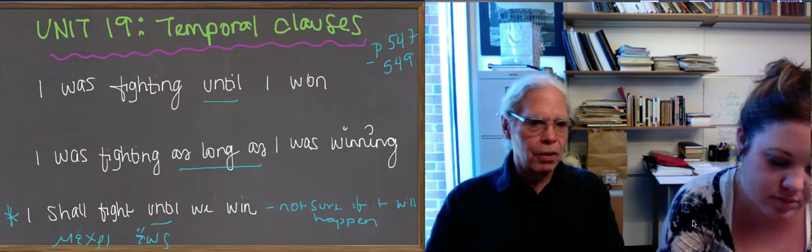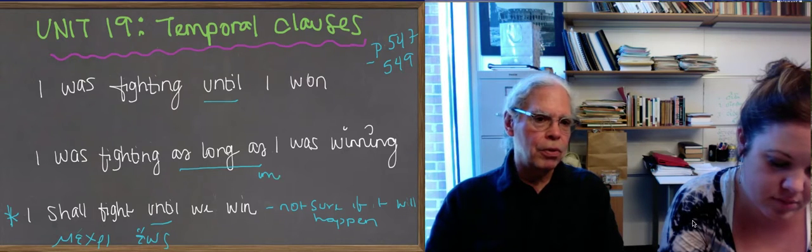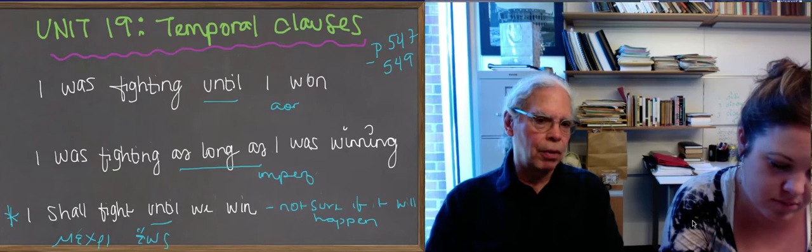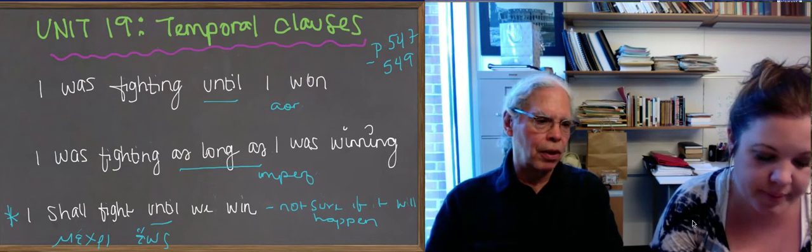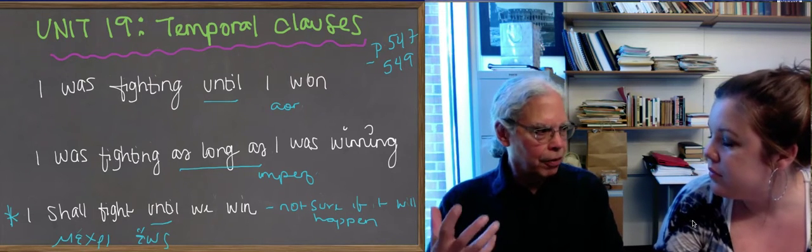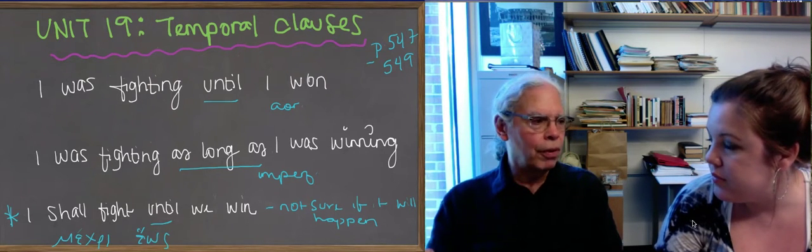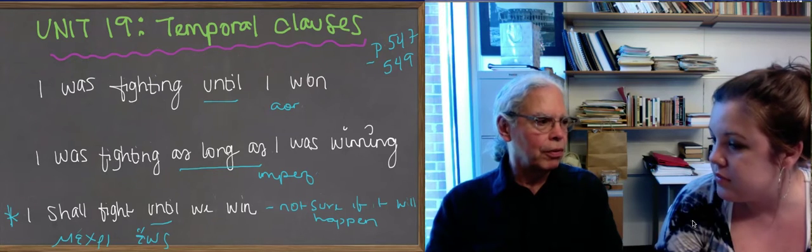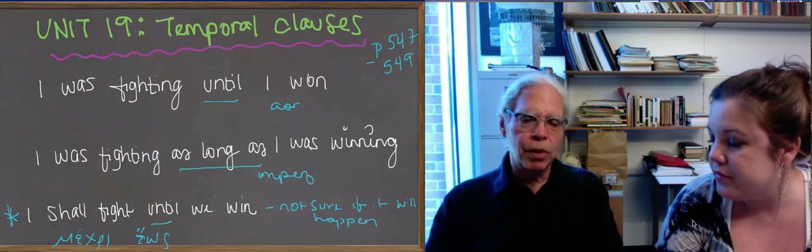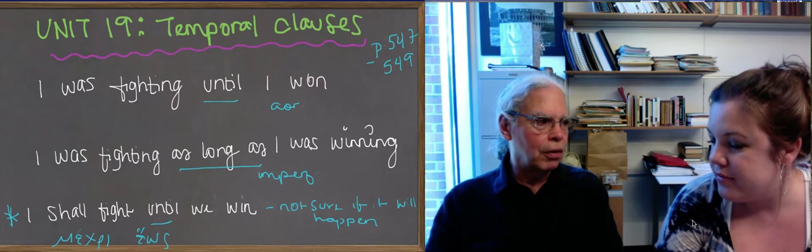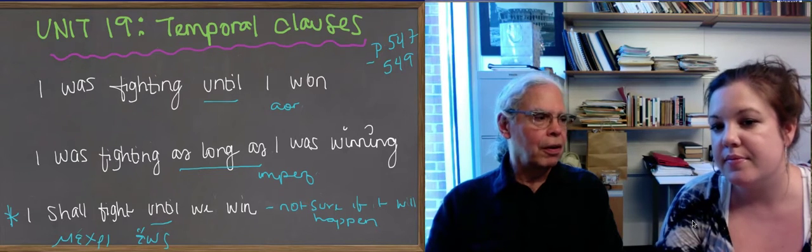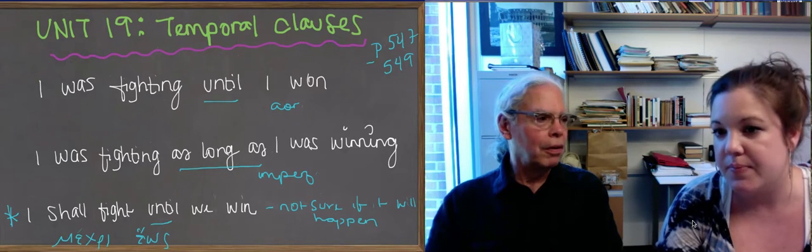But in the last one, what are you going to do? We've seen two strategies for sentences like that. Remember we talked about purpose clauses and result clauses. In purpose clauses, which are by definition your intention, you don't know whether they're real, you use the subjunctive and the optative. In result clauses, if it's a real result, then you use the indicative. I fought so long that I gave up and quit.